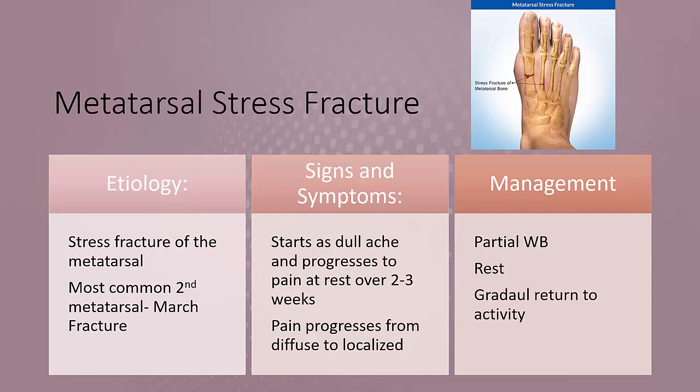Fifth metatarsal fractures happen at the insertion point of the peroneus brevis muscle. Signs and symptoms: over two to three weeks, the patient develops a dull ache during exercise that progresses to pain at rest, moving from diffuse pain to localized pain. Patients often report an increase in training duration or intensity prior to injury. Management may require a bone scan, typically two to four days of partial weight bearing followed by two weeks of rest, then a gradual return to running. Orthotics should correct any excessive pronation.